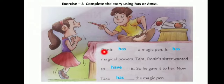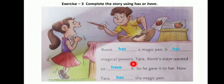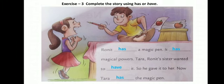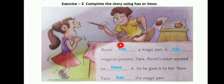Now let's proceed to exercise 3. Complete the story using have/has. Ronit dash a magic pen. It dash magical powers. Tara, Ronit's sister, wanted to dash it, so he gave it to her. Now Tara dash a magic pen.